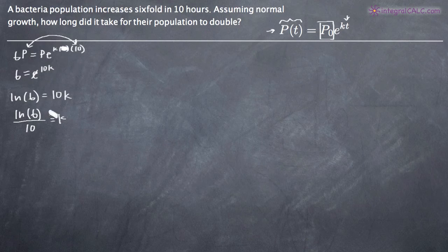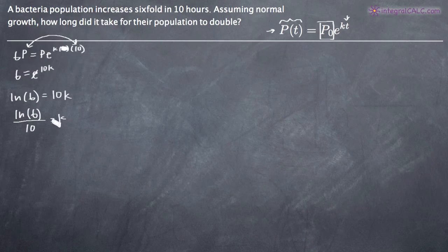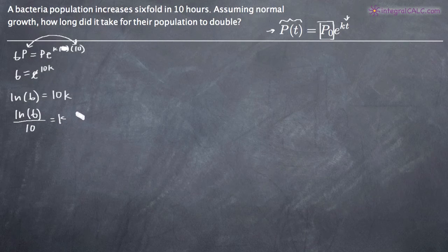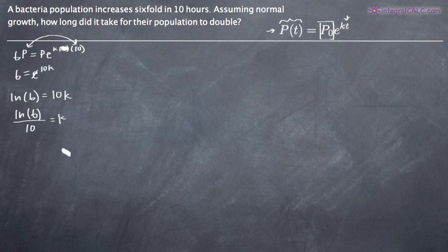I recommend that you leave k in this form — natural log of six divided by ten — instead of plugging it into your calculator and getting a decimal. We want to leave it exact rather than rounding in the middle of the problem, so we don't get any inaccuracies in our final answer.